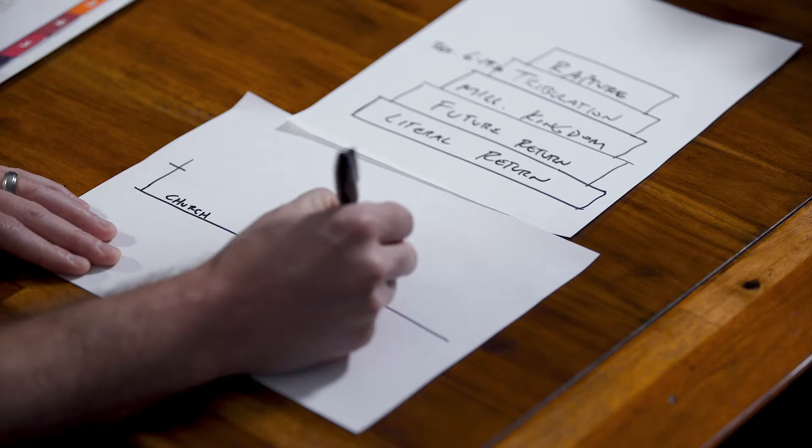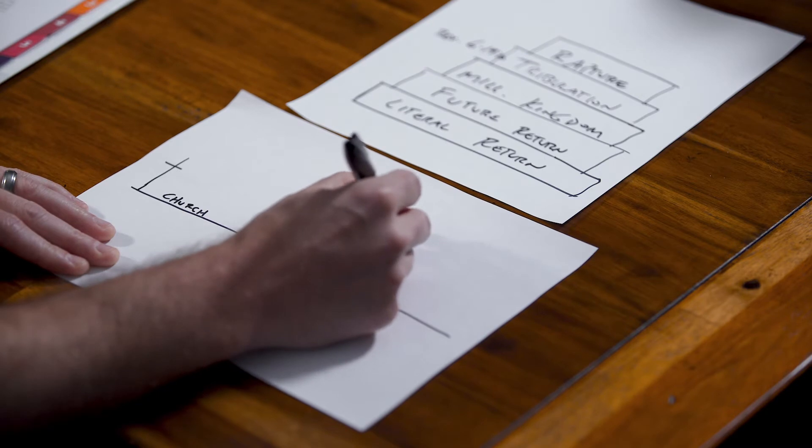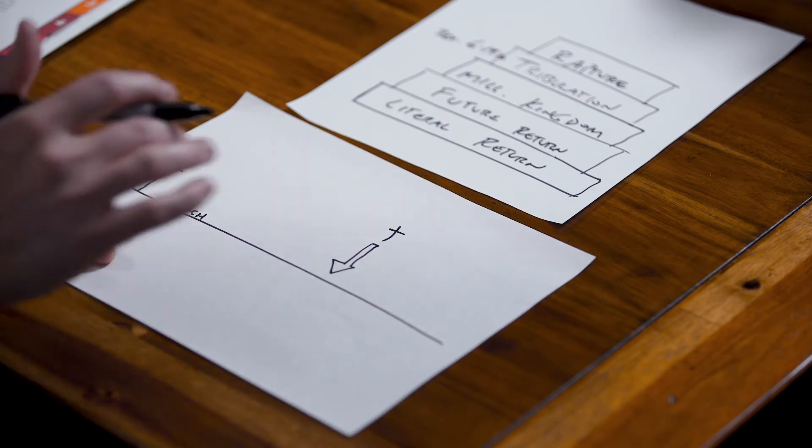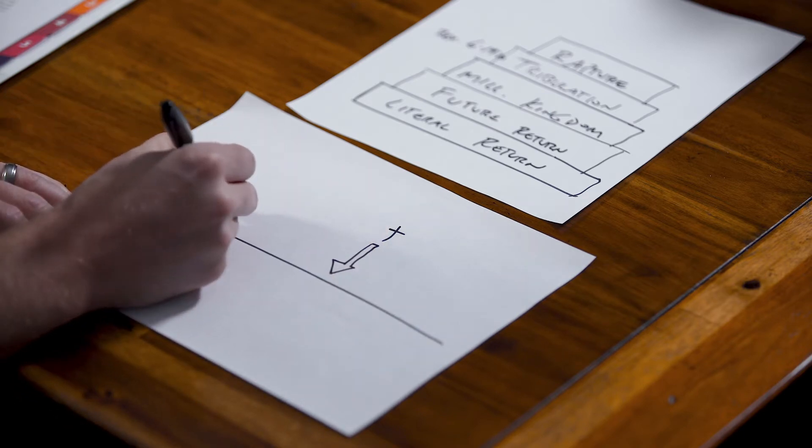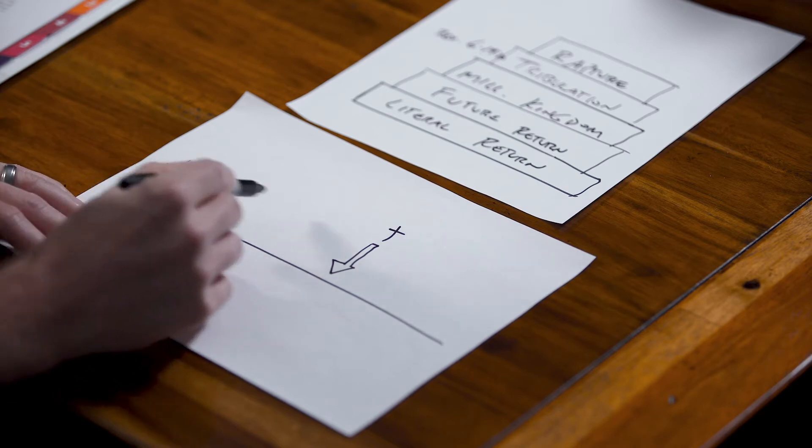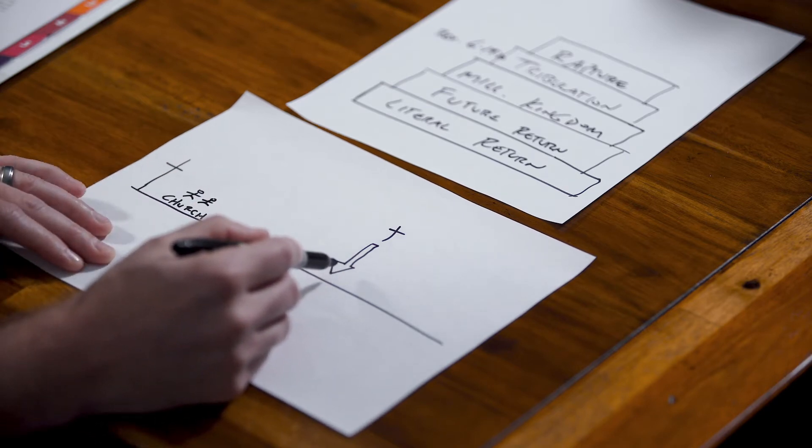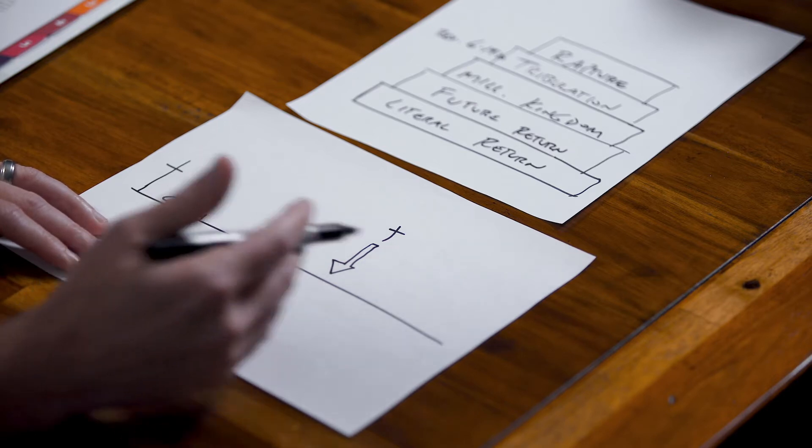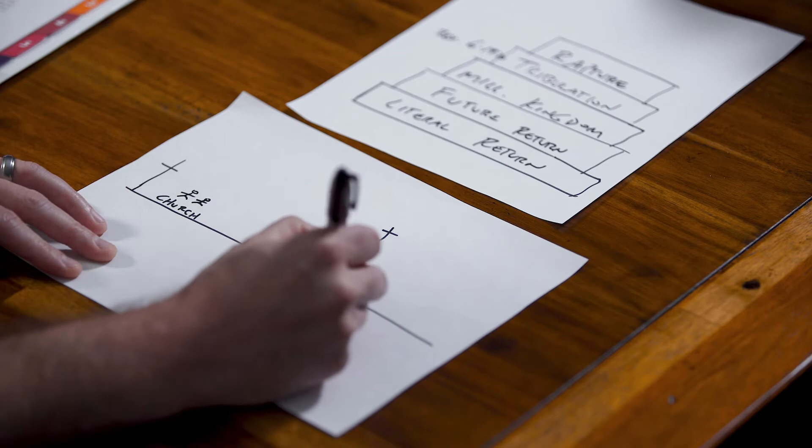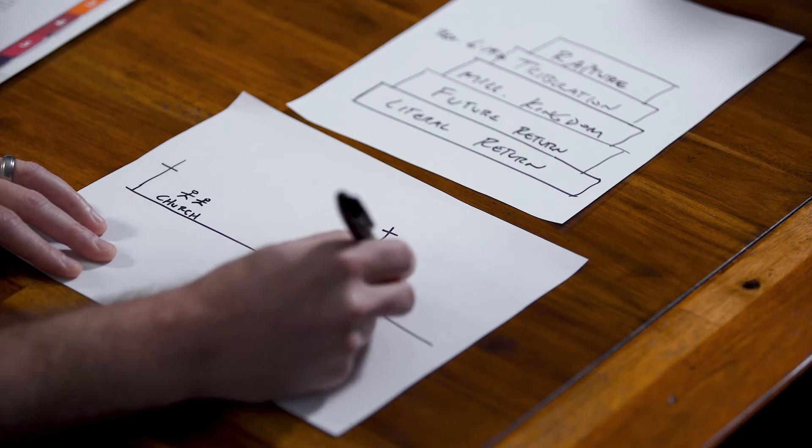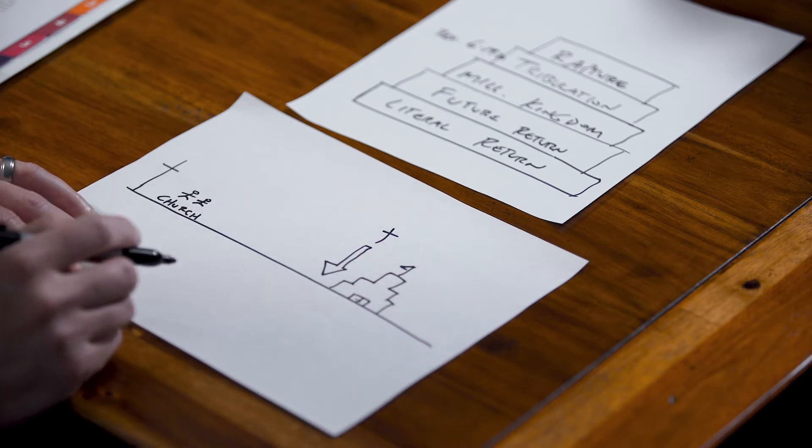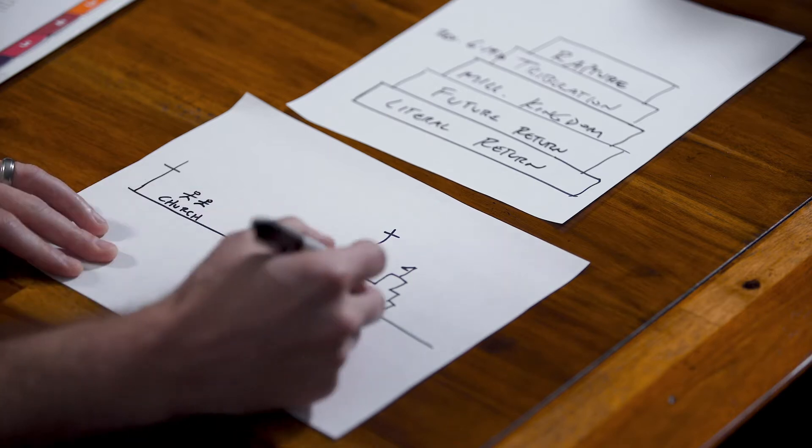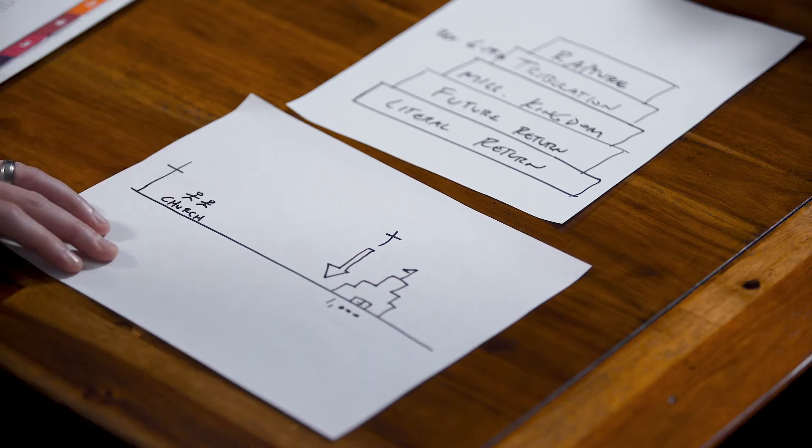We expect that Jesus will return. That's what this down arrow is. Jesus is going to return, it's a literal return, and it's a future return. So we're right here, this is you and me watching this. We're experiencing the church, and one day in the future, Revelation 19, Jesus will return. We've noted that Revelation 20 comes after Revelation 19. What does Jesus do? He establishes—this is supposed to be a castle, it's a pretty awesome castle right there—he establishes his kingdom.